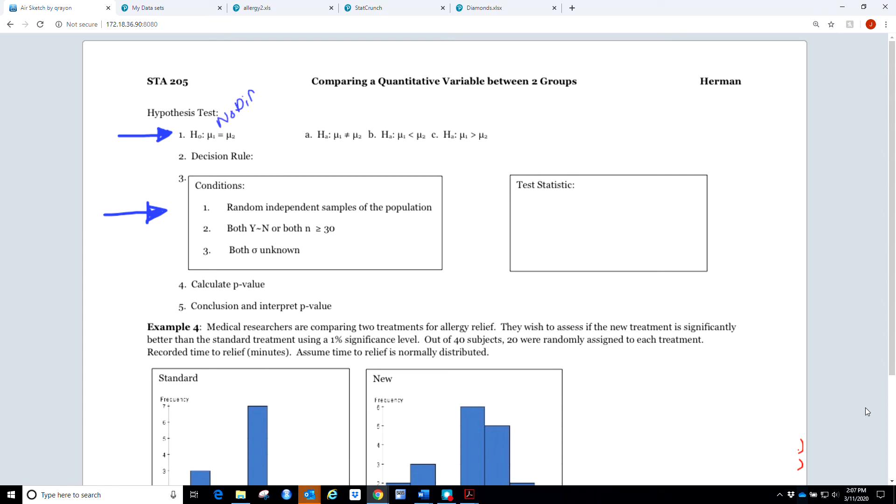For the alternative hypothesis, we have to decide which sign: the not equal to, the less than, or the greater than. How we decide that is first, we have to read the problem. The other thing we need to pay attention to in the independent hypothesis test is which thing you're calling the one versus the two subscript - which one are you listing first versus second, so you know how to compare them.